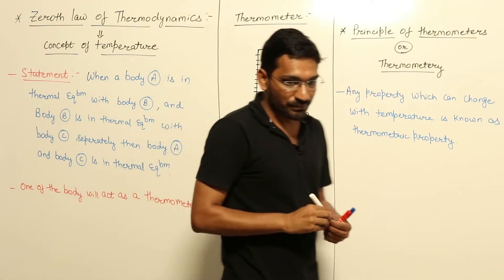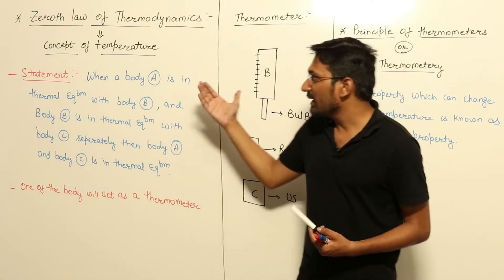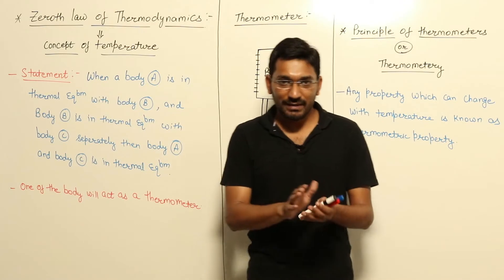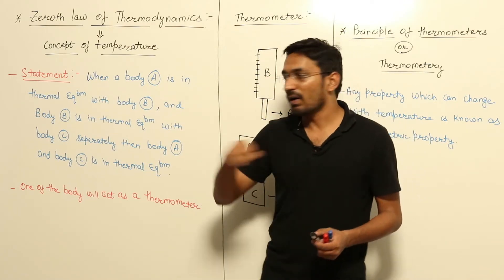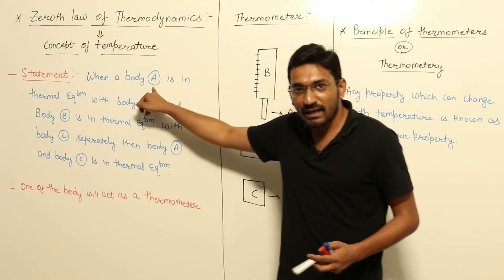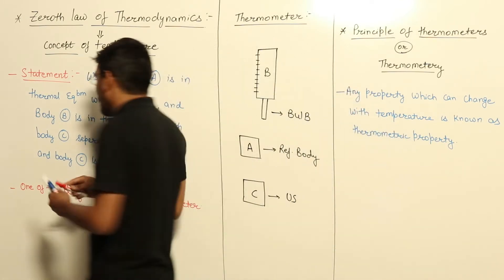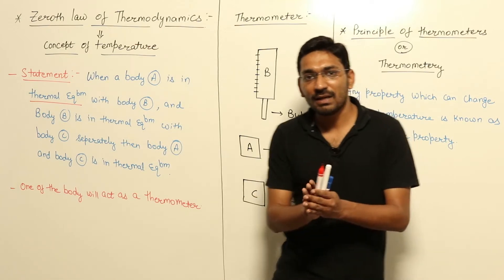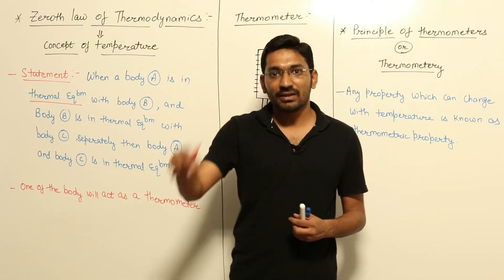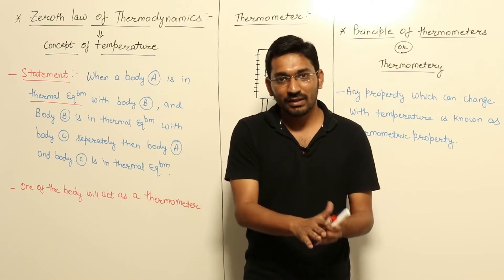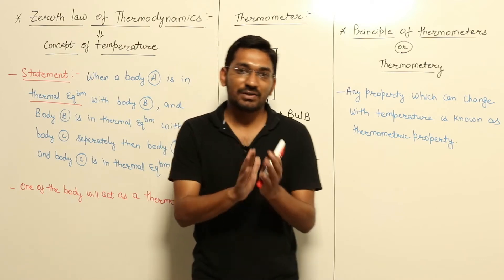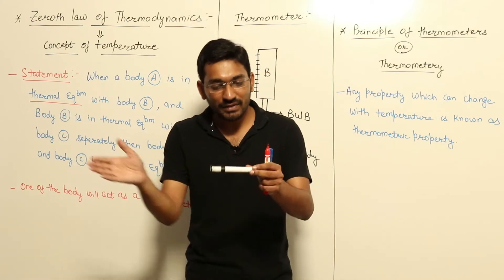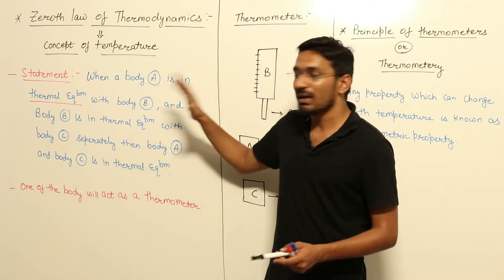This is the concept of temperature. Going through the statement of the Zeroth Law of thermodynamics: the Zeroth Law states that when a body A is in thermal equilibrium - thermal equilibrium, which we studied in the basic part, means there should not be any temperature gradient within the body or system, and with respect to the surroundings there is also no temperature gradient, meaning the temperature of both system and surrounding will be the same.